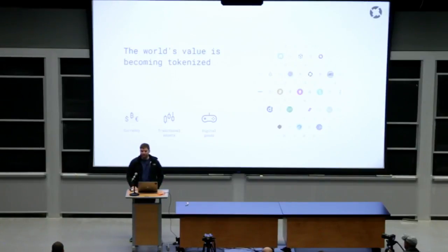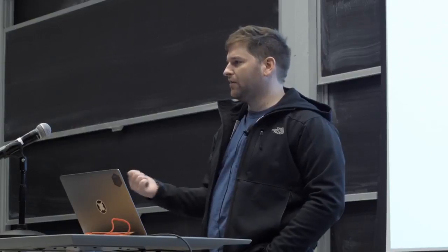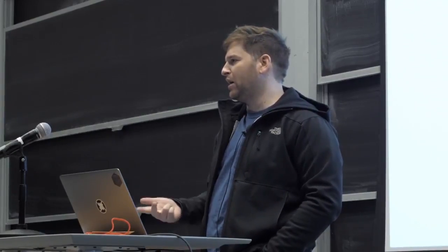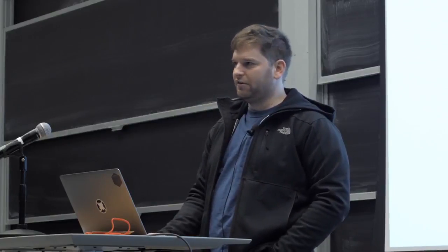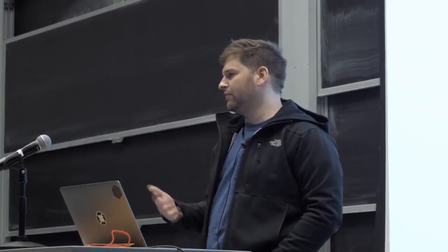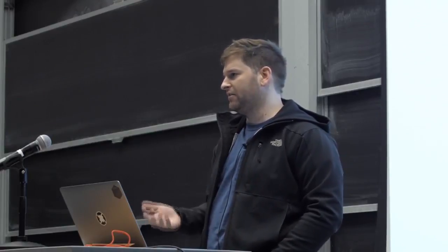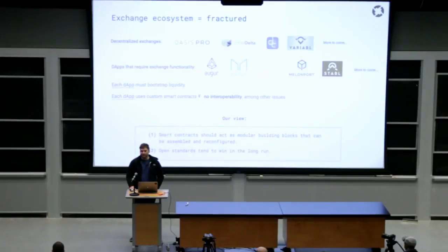So the world's value is becoming tokenized. In the past year or year and a half, hundreds of tokens have emerged on the Ethereum blockchain. And over the next few years, I think we'll see a wide variety of different assets being tokenized on Ethereum, ranging from fiat currencies to traditional assets like stocks and bonds, securities, all the way to video game items, scarce digital goods like licenses for software. All these things are eventually going to be tokenized onto blockchains such as Ethereum.